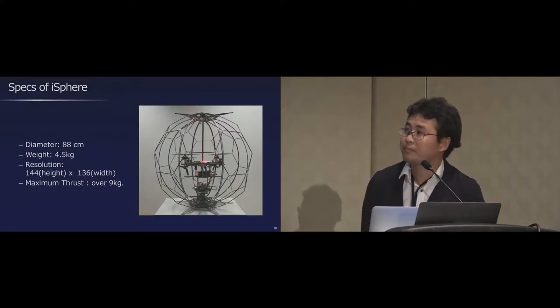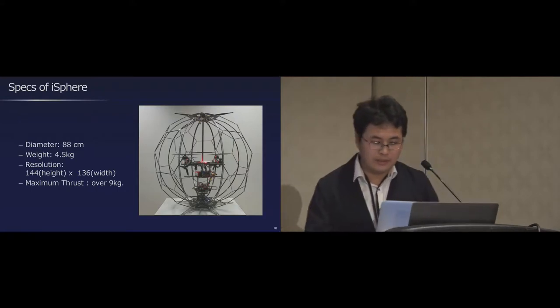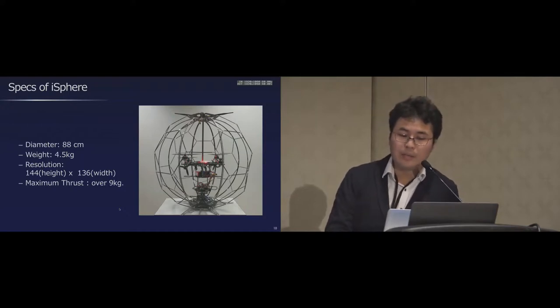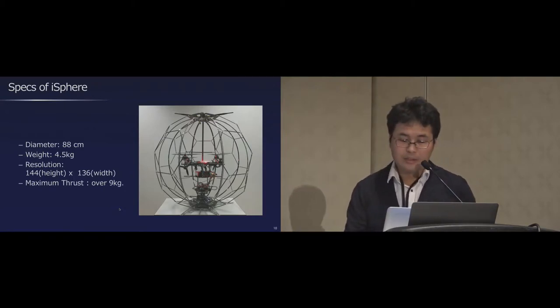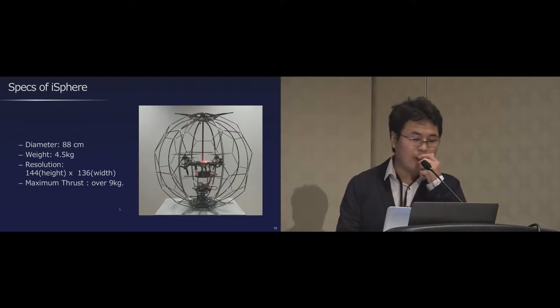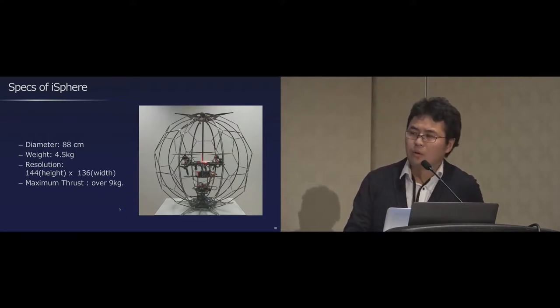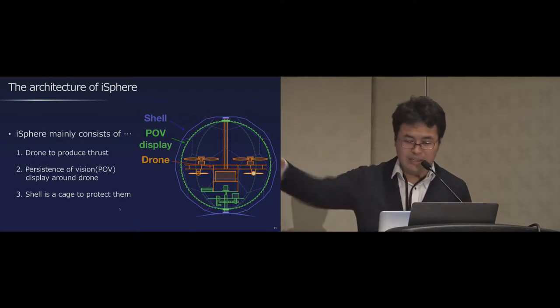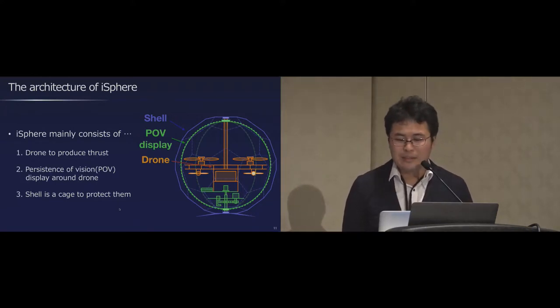I'll explain the details of the ice sphere. Ice sphere has 88 centimeter diameter, and its weight is about 4.5 kilograms without batteries. The resolution is about 144 by 136. And the maximum thrust, the total of the four motors, is over 9 kilograms. As you see, ice sphere has many parts. However, ice sphere mainly consists of three components, as the figure shows.